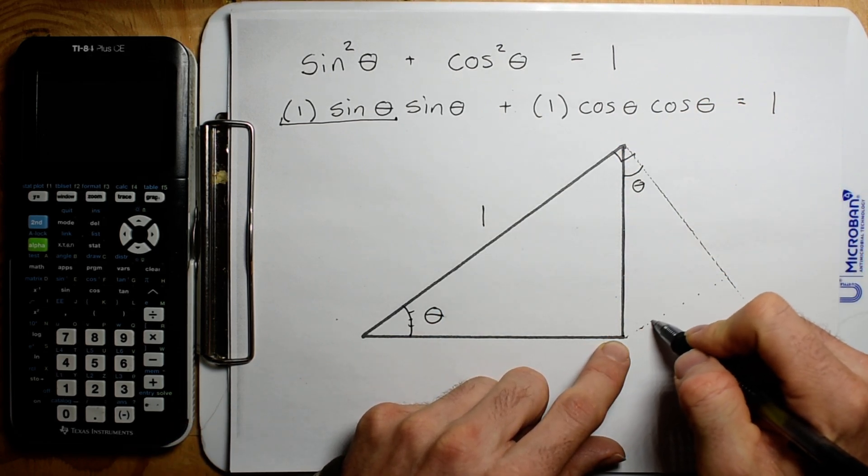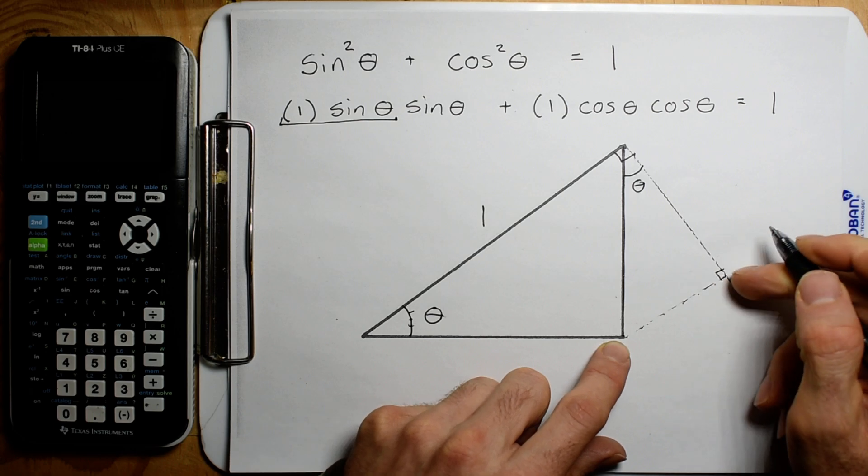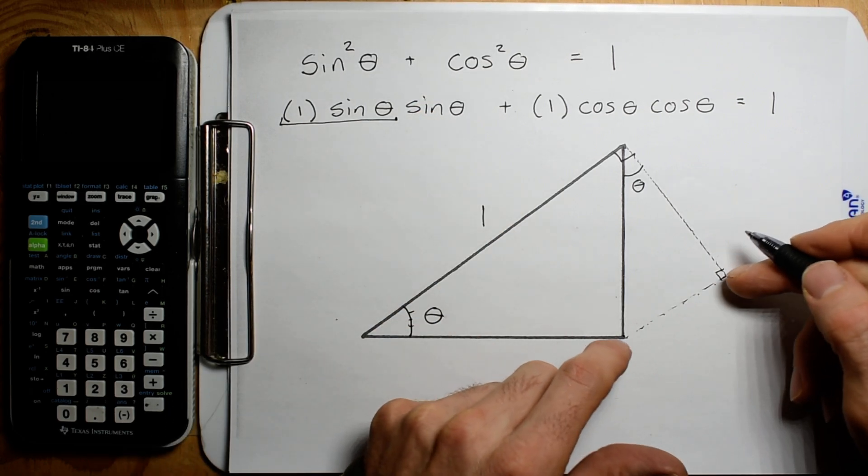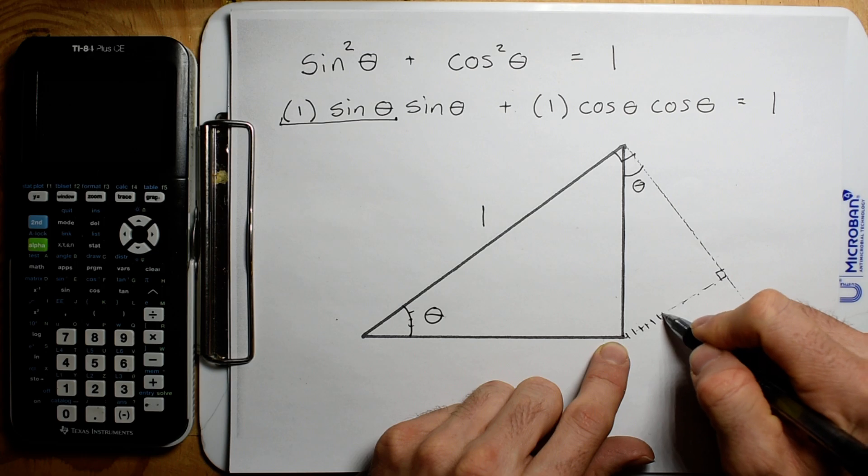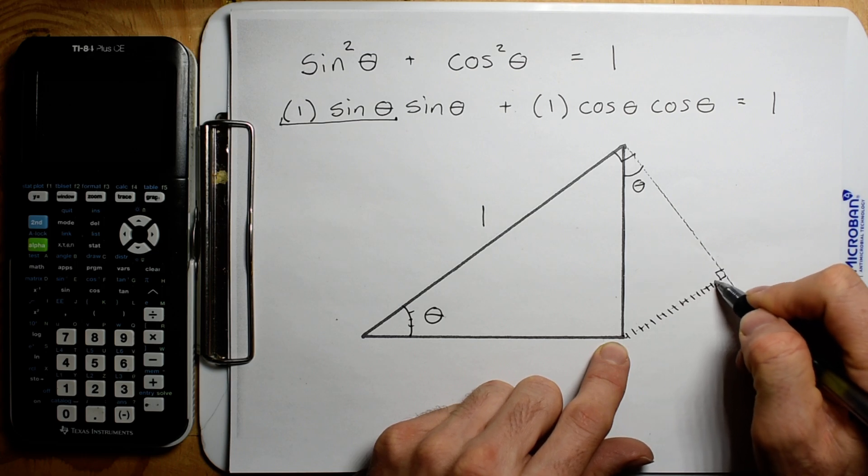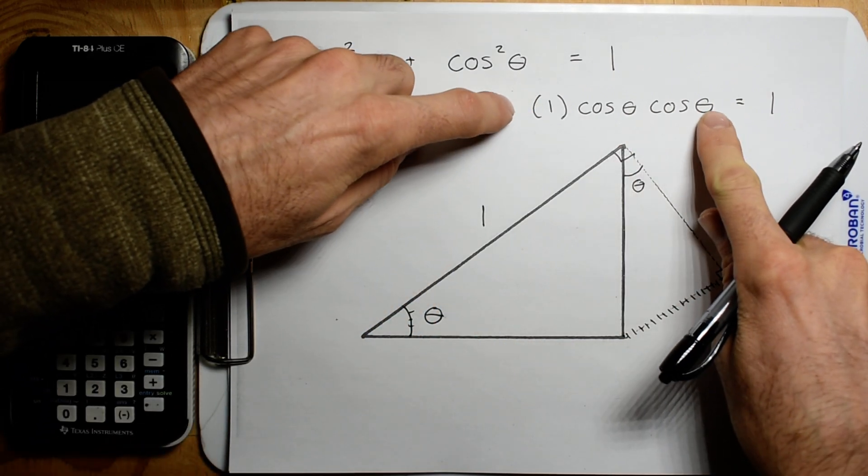We're going to take the sine component which is this component right there. And so now we're going to add it to this. We're going to take that hypotenuse of 1, take the cosine component that's right here.